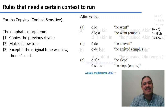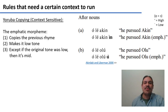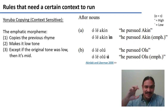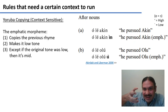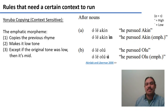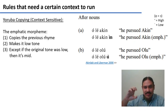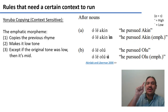This is a robust rule and it applies to nouns as well. In the structure 'o-le-a-kin,' meaning 'he pursued Akin,' you have tones high, high, mid, mid. To make the emphatic, you get the rhyme — the vowel and final consonant — and turn the mid-tone into a low tone: 'o-le-a-kinin.' Likewise with 'o-le-o-lu,' which is high, high, mid, high — you take the last rhyme and turn its tone into a low tone: 'o-le-o-lu-u,' high, high, mid, high, low.